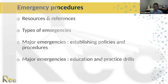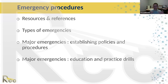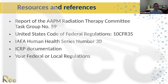Major emergencies require education. You need to look at your regulations to see how often drills should occur — annually or semi-annually for radiation emergency drills would be a good idea. Some key references: AAPM Radiation Therapy Committee Task Group Number 59, United States Code of Federal Regulations 10 CFR 35, IAEA Human Health Series Number 30, ICOP documentation, and your federal or local regulations.